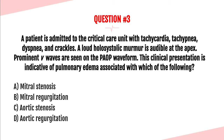Question number three. A patient is admitted to the critical care unit with tachycardia, tachypnea, dyspnea, and crackles. A loud holosystolic murmur is audible at the apex. Prominent V waves are seen on the PAOP waveform. This clinical presentation is indicative of pulmonary edema associated with which of the following? Mitral stenosis, mitral regurgitation, aortic stenosis, or aortic regurgitation? The answer is B, mitral regurgitation. You have to know that prominent V waves are associated with mitral regurgitation because of the backflow of blood into the left atrium.